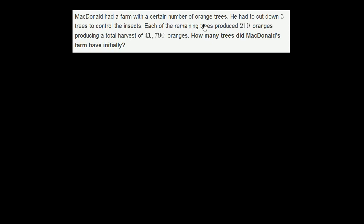McDonald had a farm with a certain number of orange trees. He had to cut down five trees to control the insects. Each of the remaining trees produced 210 oranges, producing a total harvest of 41,790 oranges. How many trees did McDonald's farm have initially?